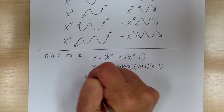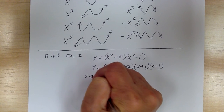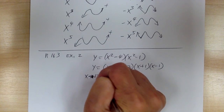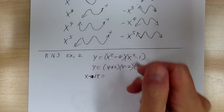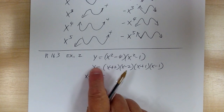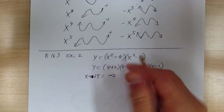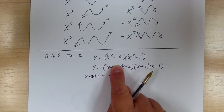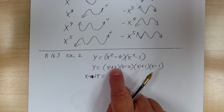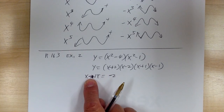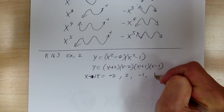The x-intercepts are found when y equals 0. When x equals -2, that factor equals 0, and 0 times anything gives 0. So from each factor: x = -2, x = 2, x = -1, and x = 1 are your x-intercepts.